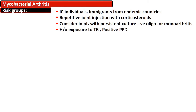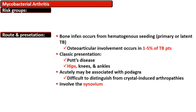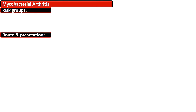History of exposure to TB and a positive tuberculin test are risk factors. Bone infection occurs from hematogenous seeding, either from primary TB or latent TB. One to 5% of tuberculous patients develop articular involvement. Classical presentation can involve the spinal vertebral column; the most commonly affected peripheral joint is the hip, with knees and ankles also affected. It can be associated with gout and is difficult to distinguish from crystal-induced arthritis.